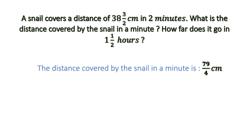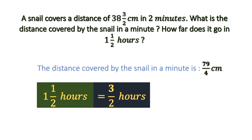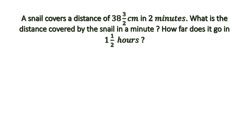Now we go to the second question: how far does it go in one and a half hours? One and a half hours is a mixed fraction; let us convert it into an improper fraction — it becomes 3/2 hours. Previously we were doing all our calculations in minutes, so we need to change the unit from hours to minutes. 1 hour equals 60 minutes, so 3/2 hours will be 3/2 multiplied by 60. We can cancel: 2 is a common factor of 2 and 60, giving 3 × 30 = 90 minutes.